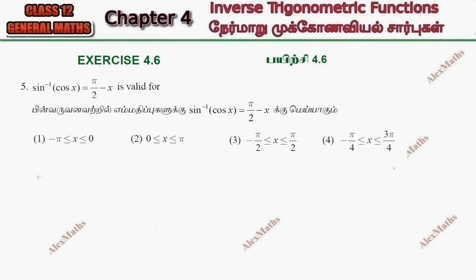Hi students, this is Alex here. Exercise 4.6, question number 5: sin inverse of cos x equal to pi by 2 minus x is valid for — this is a direct question, we have 4 options. We have a textbook concept on page 160 of the English medium textbook.